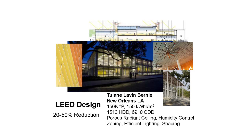This is in Tulane. This was a deep retrofit. Here you're getting 150 kilowatt hours per square meter. You have to integrate the subsystems together. What's being done to get this kind of reduction is using a lot of passive techniques: radiant ceilings, efficient lighting and shading. You're letting the natural dynamics of the building drive performance as opposed to overloading the building with heating, ventilation, and air conditioning systems.